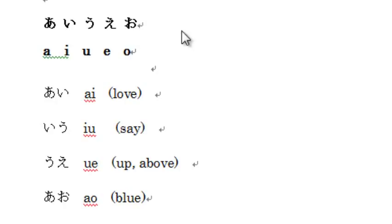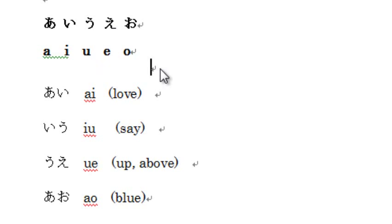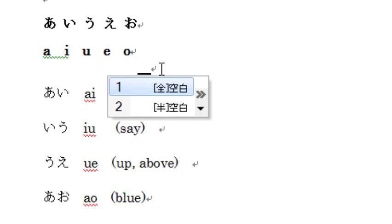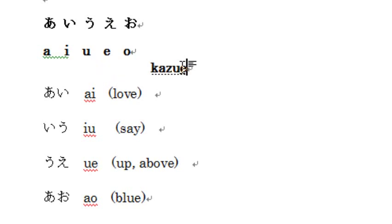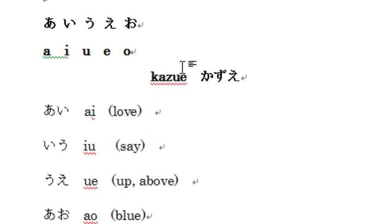There are a lot of mistakes from native English speakers when pronouncing 'e' for い, because in English you say 'i', right? But in Japanese, we pronounce it 'e'. For example, my name is Kazue — it's not 'Kazuee', it's Kazue. And when you type it in Japanese, it's 'k-a-z-u-e', not 'Kazuee'.